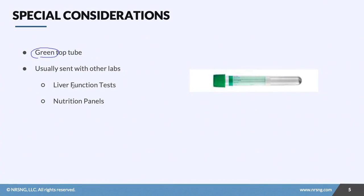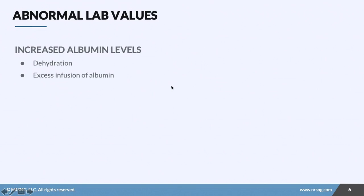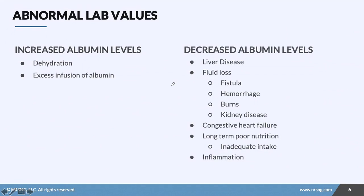You're going to collect albumin levels with the green top tube, and it's usually sent with other labs. We're going to be looking at LFTs — liver function tests — because remember, albumin is produced by the liver. Nutrition panels are generally sent at the same time as well, including pre-albumin, since it's one lab we can run concurrently.